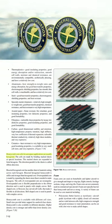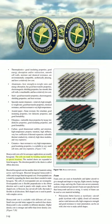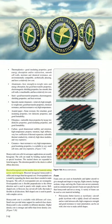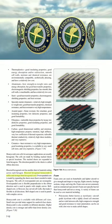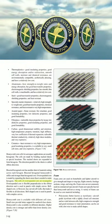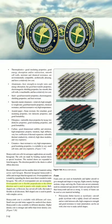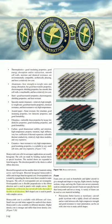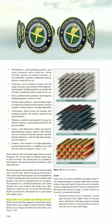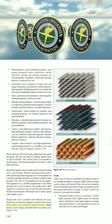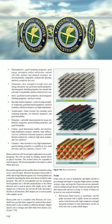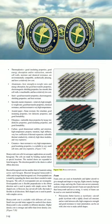Honeycomb core cells for aerospace applications are usually hexagonal, made by bonding stacked sheets at special locations and expanding them to form hexagons. The direction parallel to the sheets is called the ribbon direction. Dissected hexagonal core has another sheet of material cutting across each hexagon and is stiffer and stronger than hexagonal core. Overexpanded core is made by expanding the sheets more than needed for hexagons, creating rectangular cells; it is flexible perpendicular to the ribbon direction and used in panels with simple curves. Bell-shaped core (flexi-core) has curved cell walls that make it flexible in all directions and is used in panels with complex curves. Honeycomb core is available in different cell sizes and densities; higher density core is stronger and stiffer.